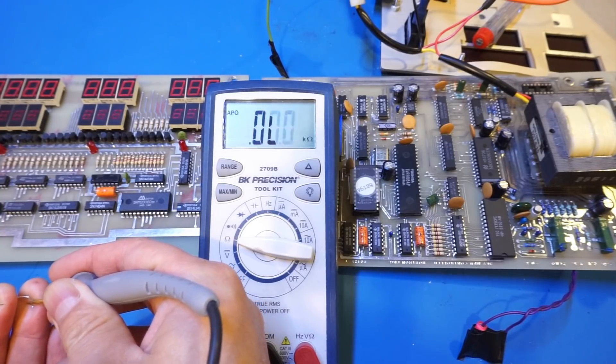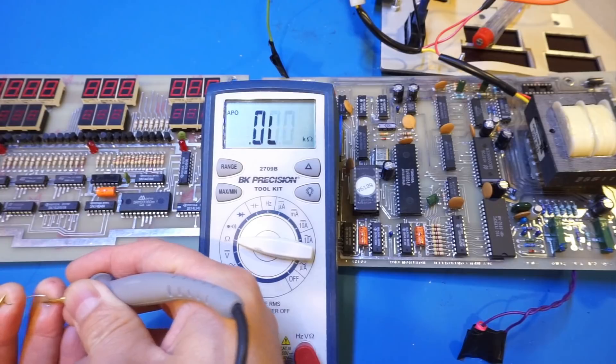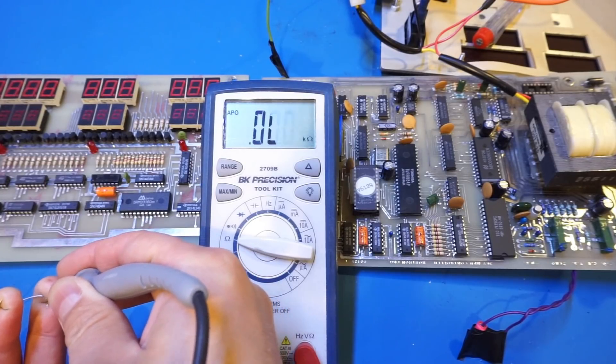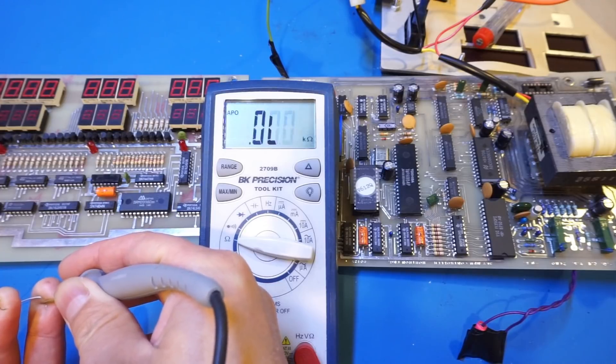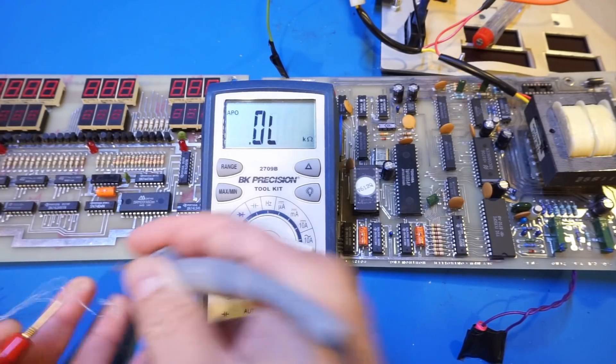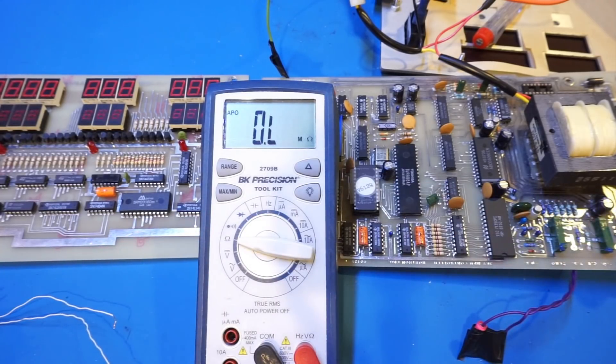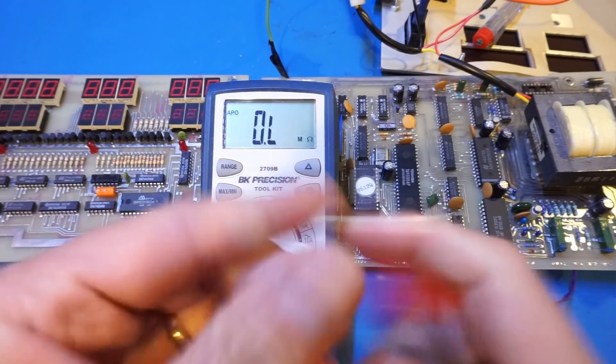I'm going to do the measurement and want you to pay attention to the multimeter itself. As you can see, in ohm mode it's oscillating a little bit. So that's what the measurement result is. I'll let you think about what this device might be.